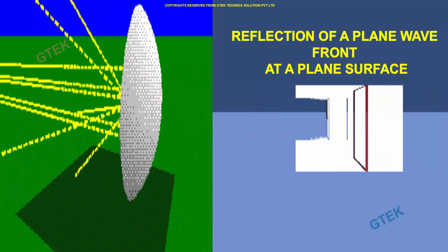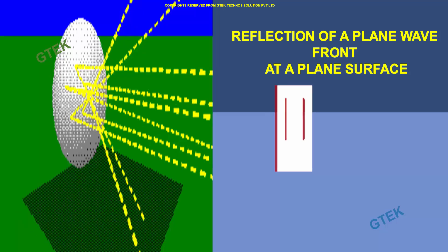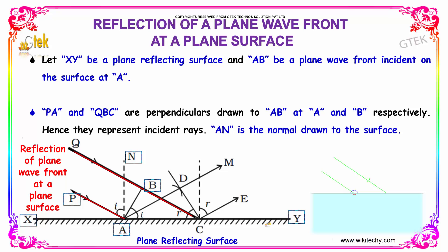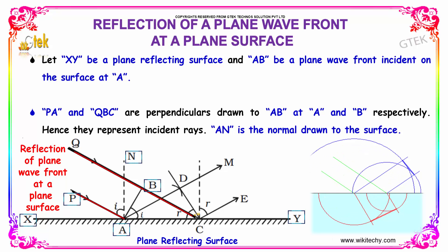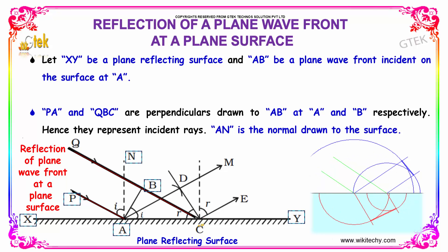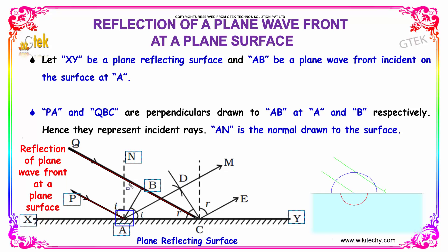Now, let's talk about the reflection of a plane wavefront at a plane surface. Here is the XY plane on which the waves are incident. AB is a plane wavefront incident on the surface at A. PA and QBC are perpendiculars drawn to AB at A and B respectively, and hence they represent the incident rays.